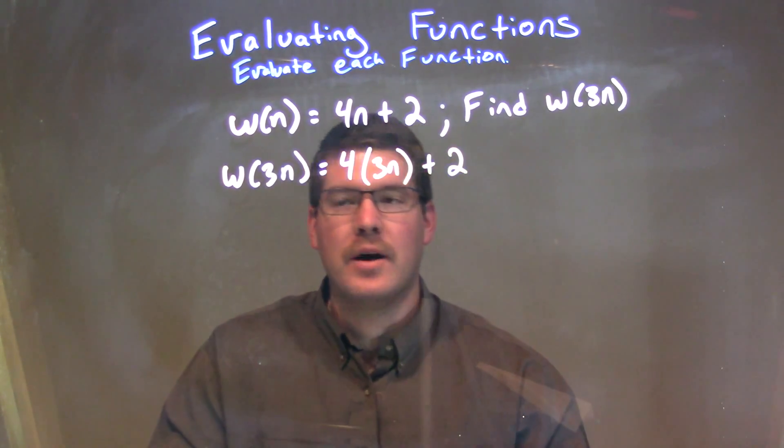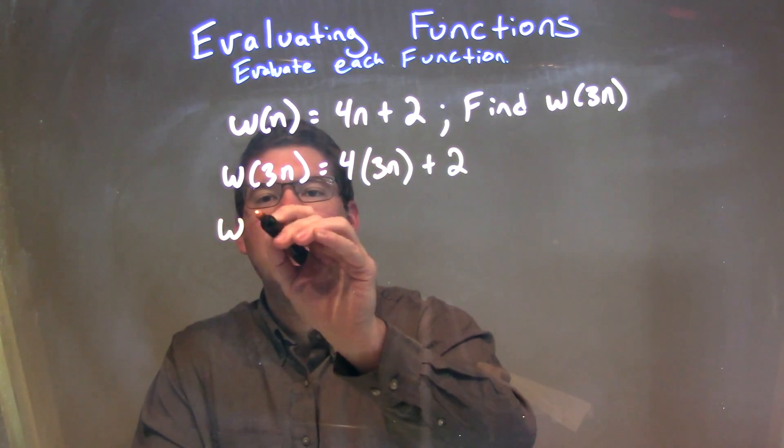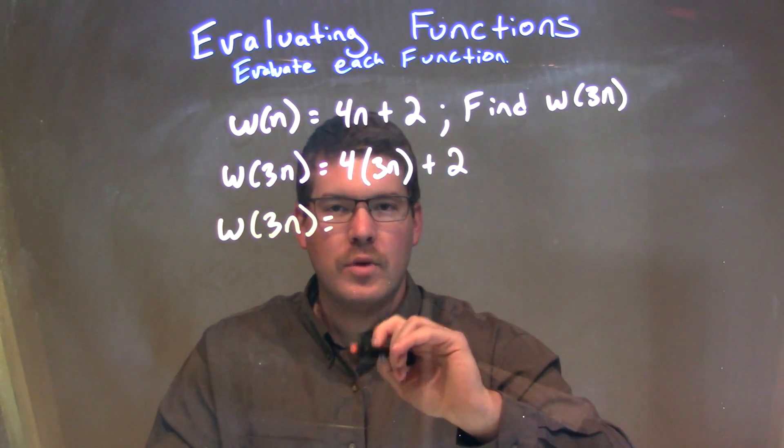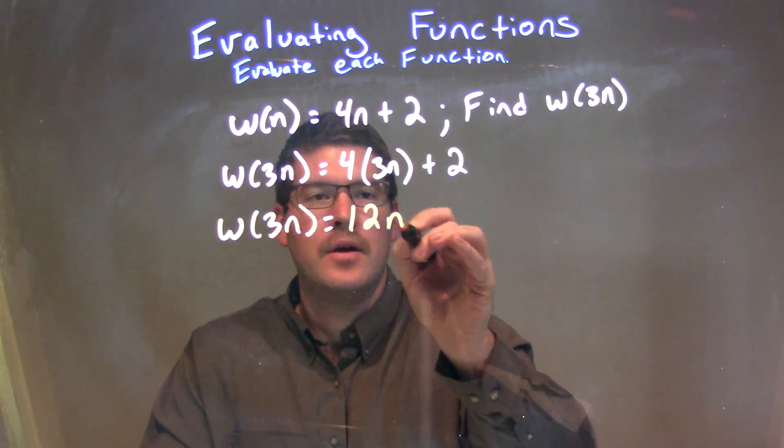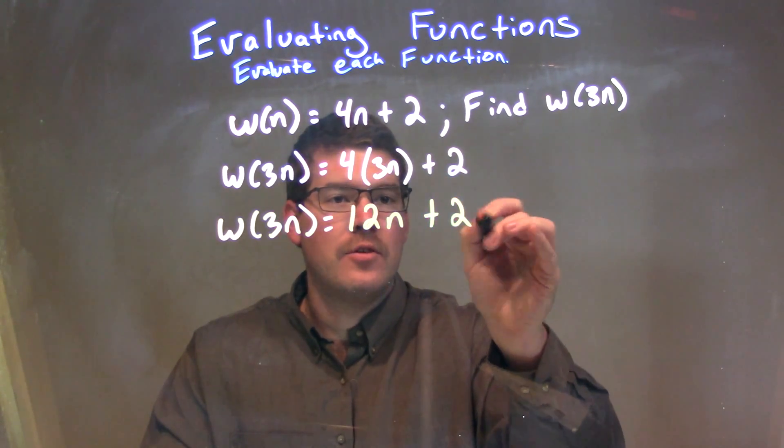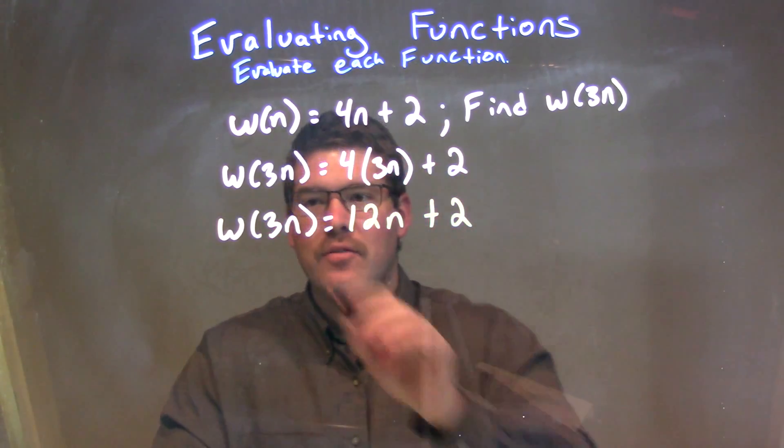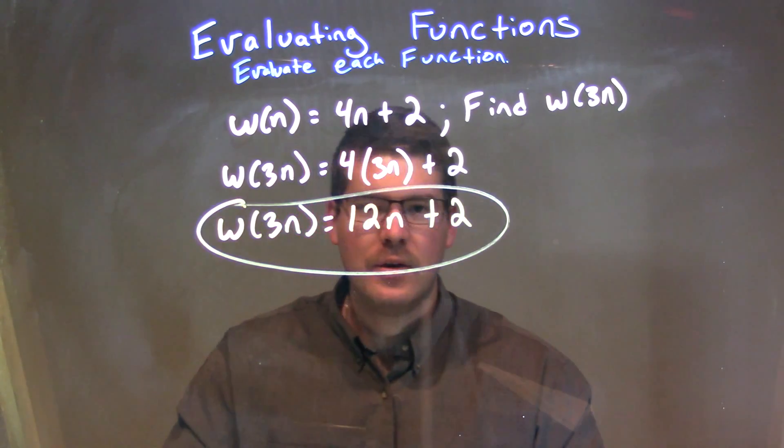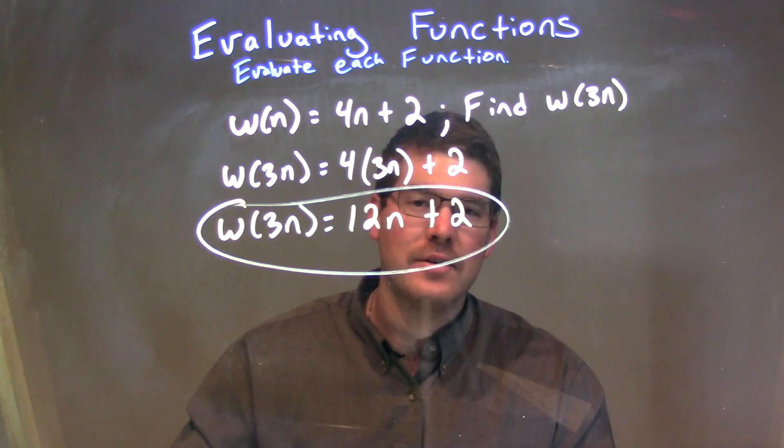And now I need to simplify. All right, so we have w(3n) right here is equal to 4 times 3n is 12n. Then, we bring down the plus 2, and that's it. There's nothing more we can simplify. So, our final answer here is just w(3n) is equal to 12n plus 2.